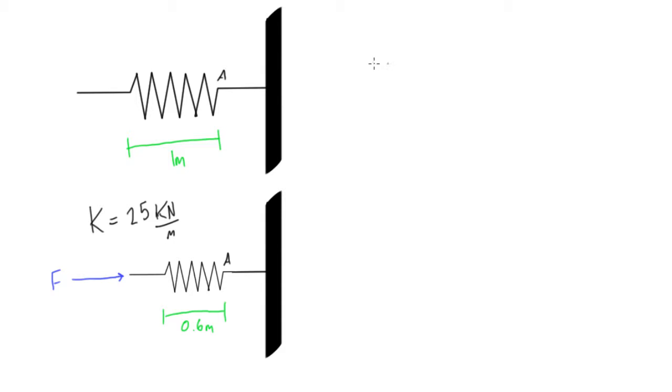All right, so what we do is we use Hooke's law. We have F is equal to K times X. You might also see this written as F equals K times delta X, because delta X is the change in length from the undeformed position.